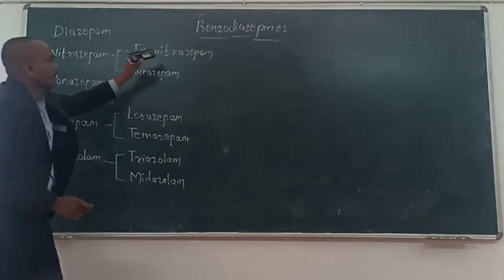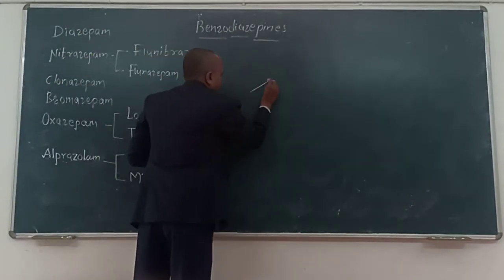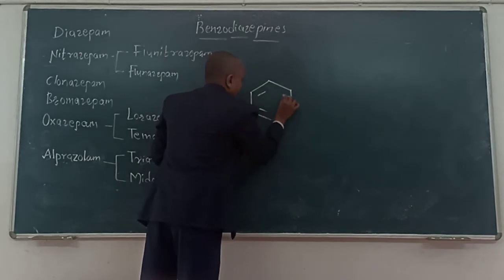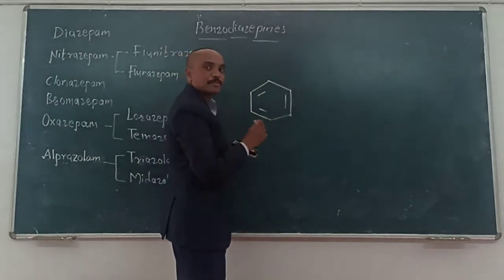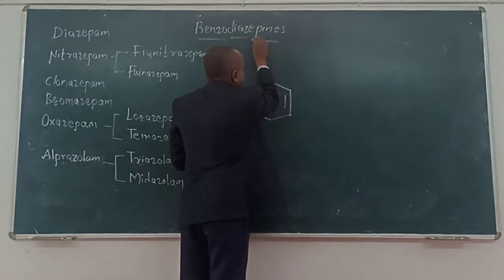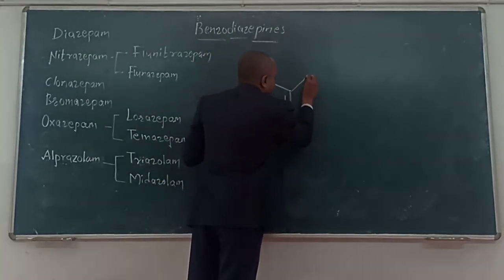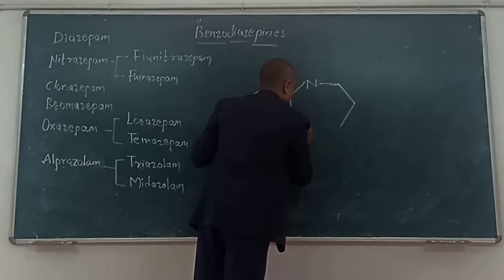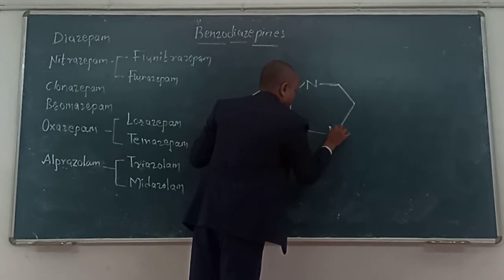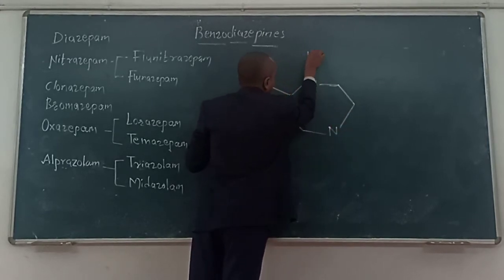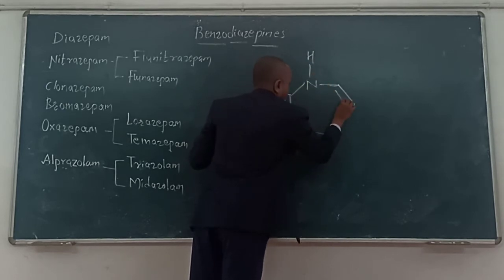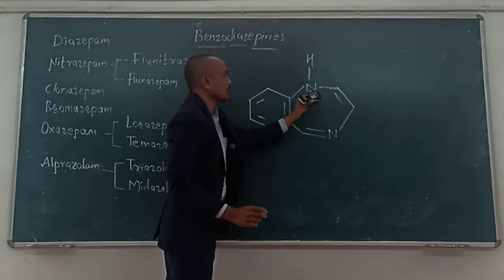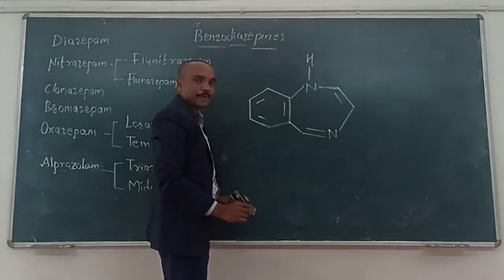Benzo means the benzene ring, and diazepine indicates the presence of 2 nitrogens. Diazepine has 2 nitrogens present in a 7-membered ring. So this is a 1-4-benzodiazepine.